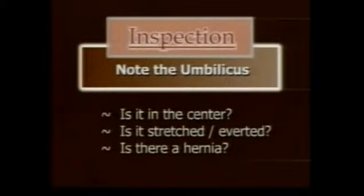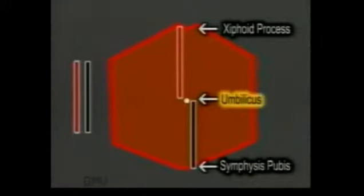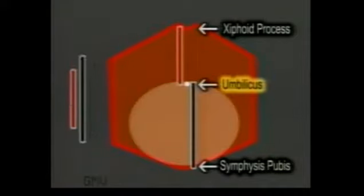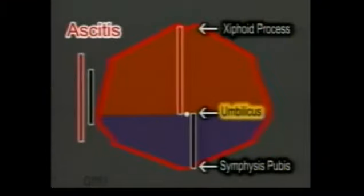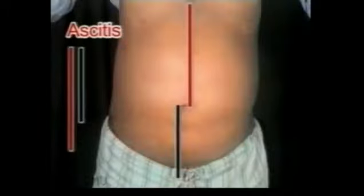After inspecting the skin, inspect the umbilicus. Is the umbilicus in the center? Normally it is in the midline, midway between the tip of the xiphoid process and the top of the symphysis pubis. It is displaced upwards by lumps arising from the pelvis — note that the distance between the xiphoid process and the umbilicus is less than the distance between the umbilicus and symphysis pubis. In ascites, the reverse is the case: the distance between the xiphoid process and the umbilicus is more.